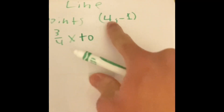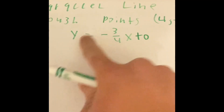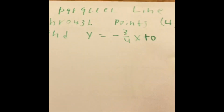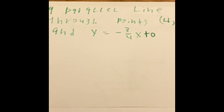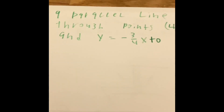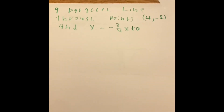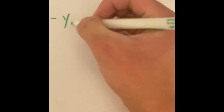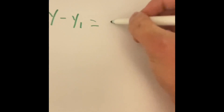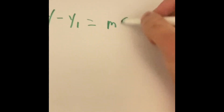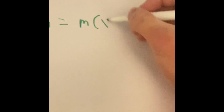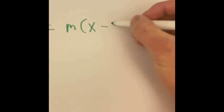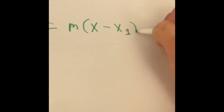We're going to use the point slope form — this slope intercept equation — to try to make a new slope intercept equation that will become a parallel line. In order to do this, we're going to use a special formula called point slope form: y minus y1 equals the slope multiplied by x minus x1 in parentheses.